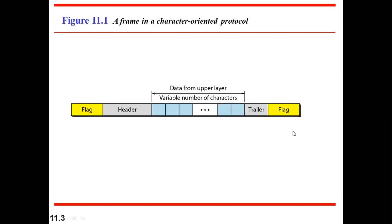The character-oriented approach is ideal when you are sending only text messages. The special flag character used must be one that does not appear in the actual text. You identify a character not present in the text and insert it as the flag. Whenever the receiver encounters this special character, it knows it is the beginning or end of a frame.